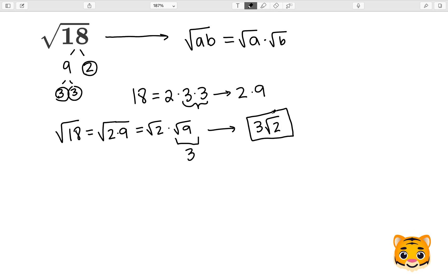So this is how we pull out a perfect square root from our square root. Now if we wanted to estimate the square root of 18, we can also do that by finding perfect square root values that are close to the square root of 18.